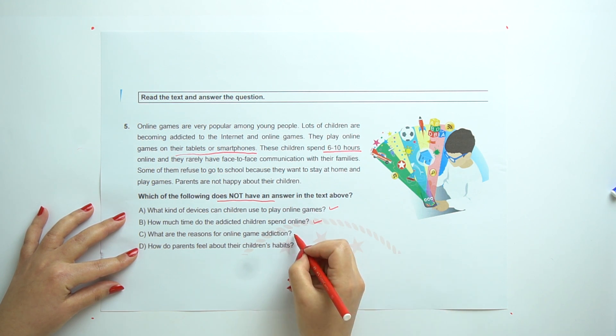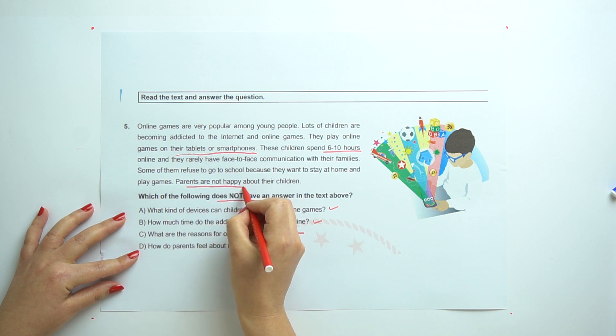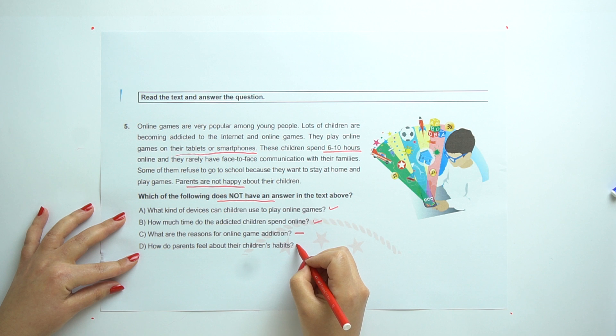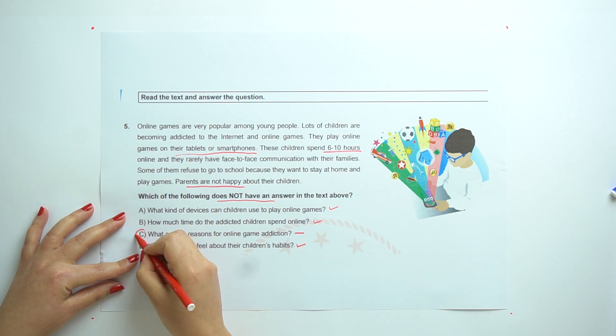What are the reasons for online game addiction? So, we don't have this one. How do parents feel about their children's habits? They are not happy about their children's habits. So, we can say this one too. And the answer is C.